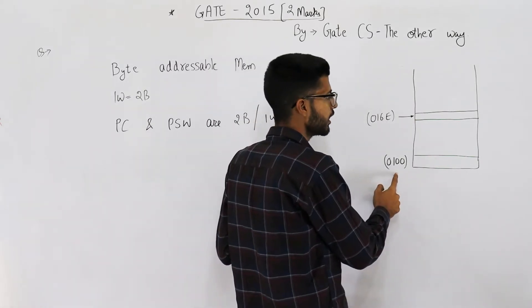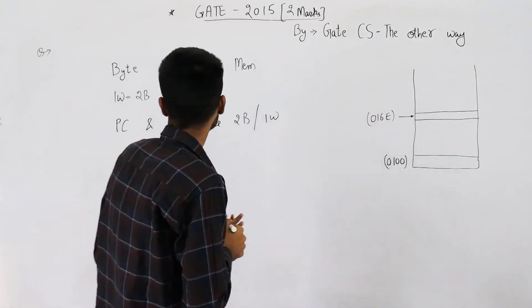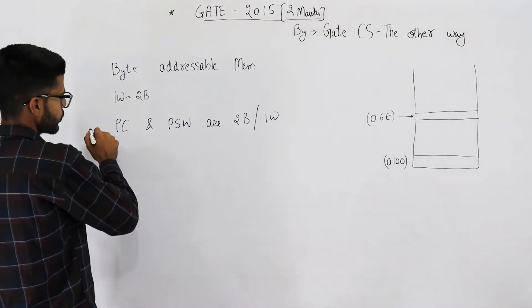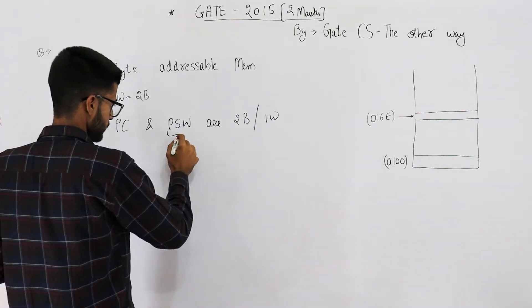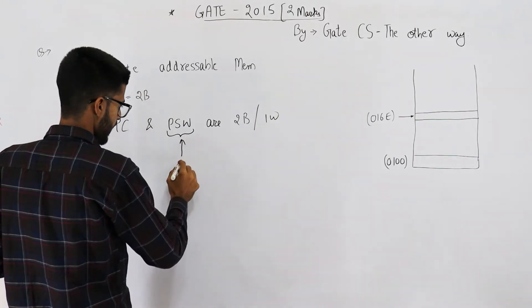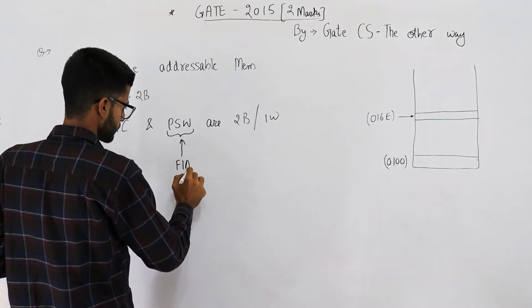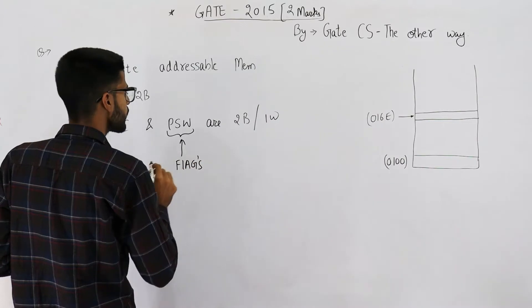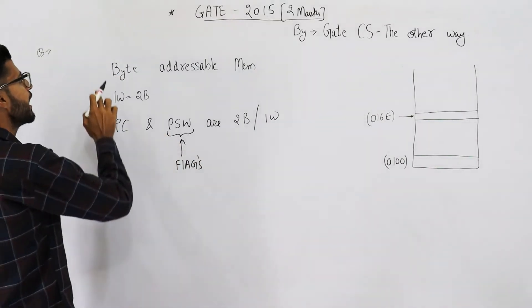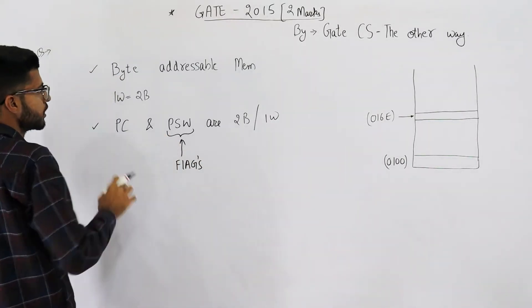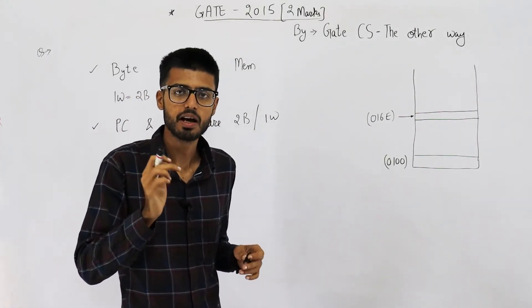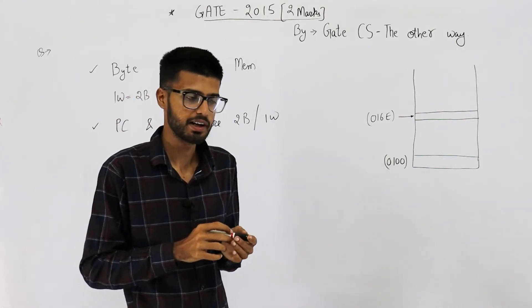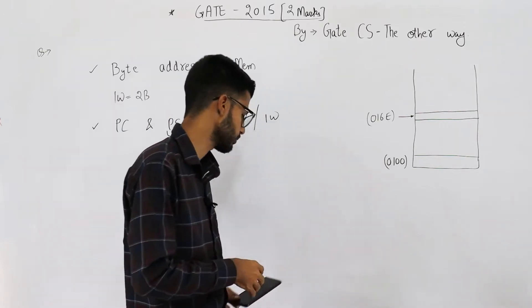You are given there is an in-memory stack which starts from this location and grows upwards. Program counter and program status word, that means flags register, both are of two bytes. The memory is byte addressable, which means each byte in memory will have a unique address.